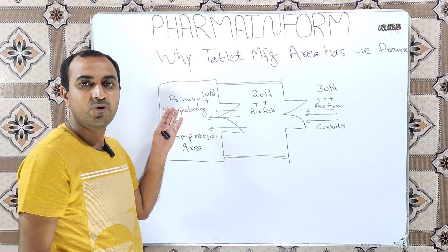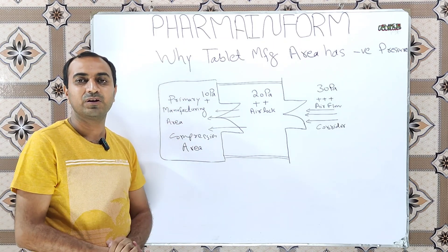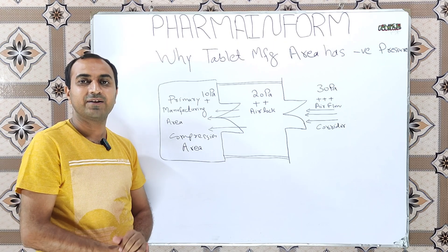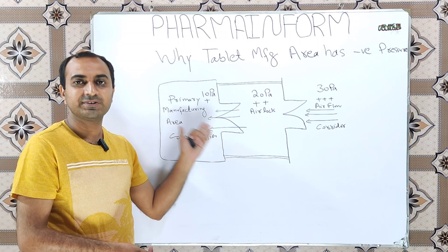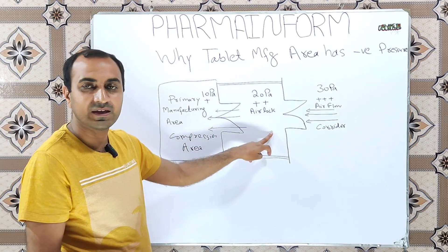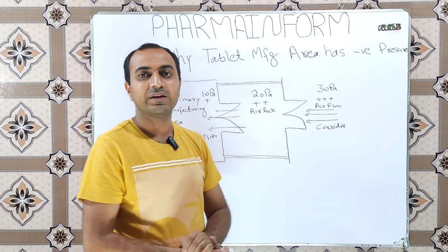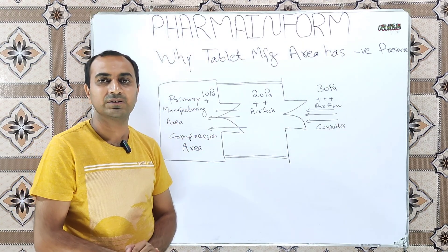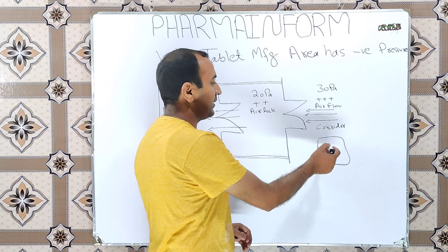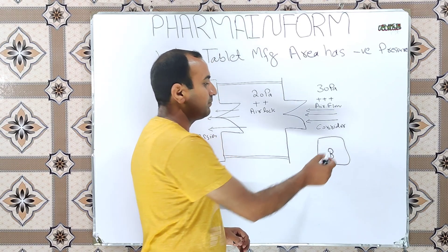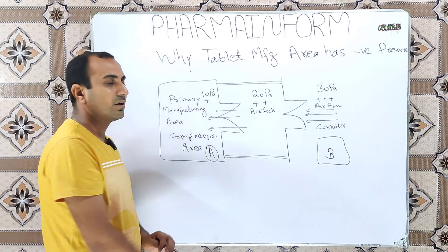During compression, dust is generated. If we open the door of the compression room, this dust can come out into the air lock, and from the air lock this air can come into the corridor, which may contaminate other products. Suppose in the corridor we also have an area where product B is under compression and here product A is under compression.